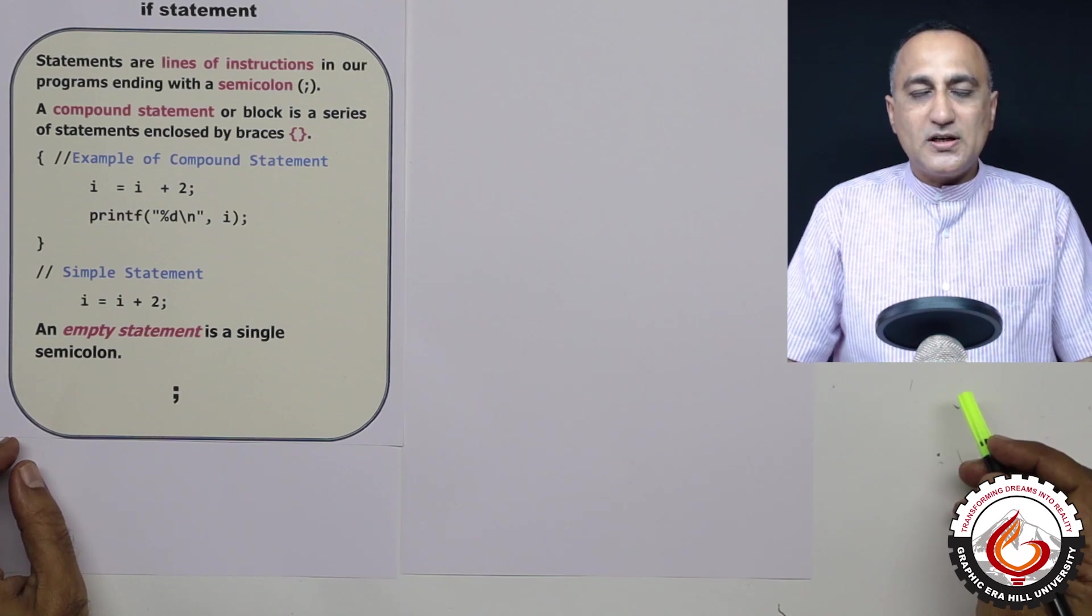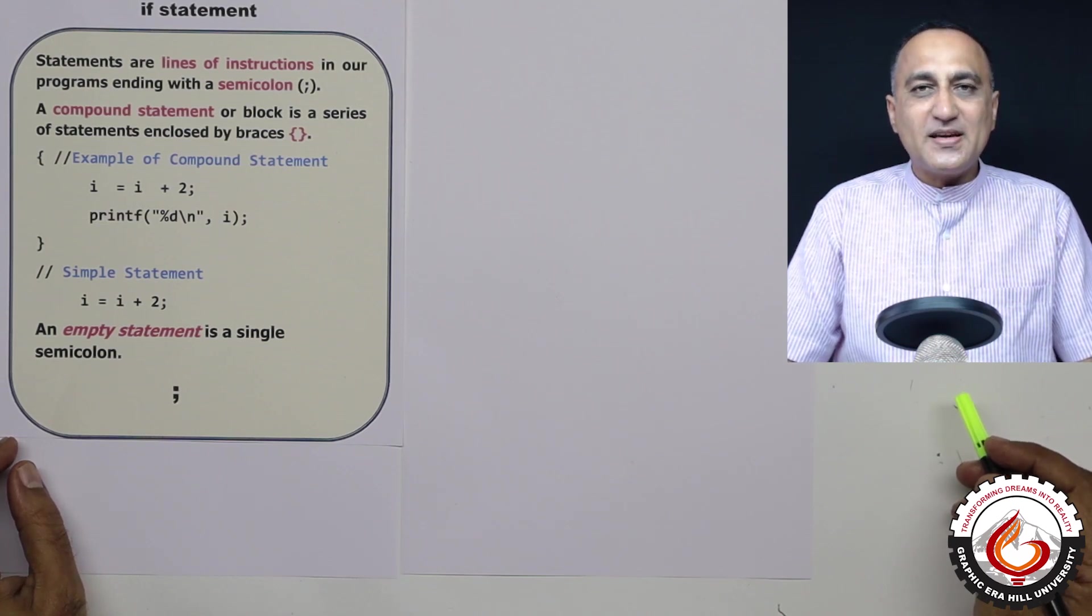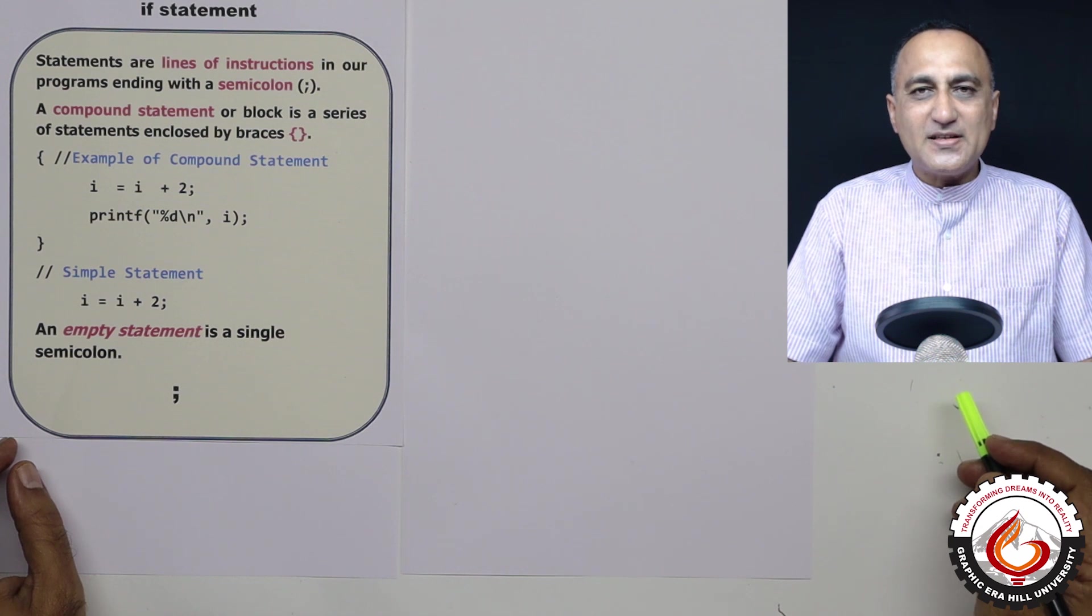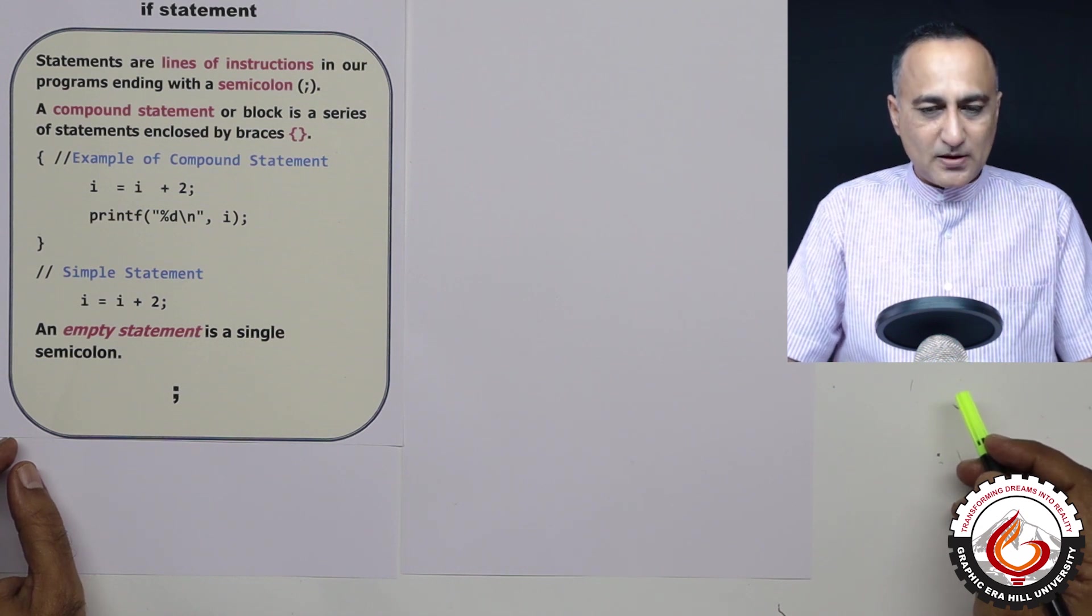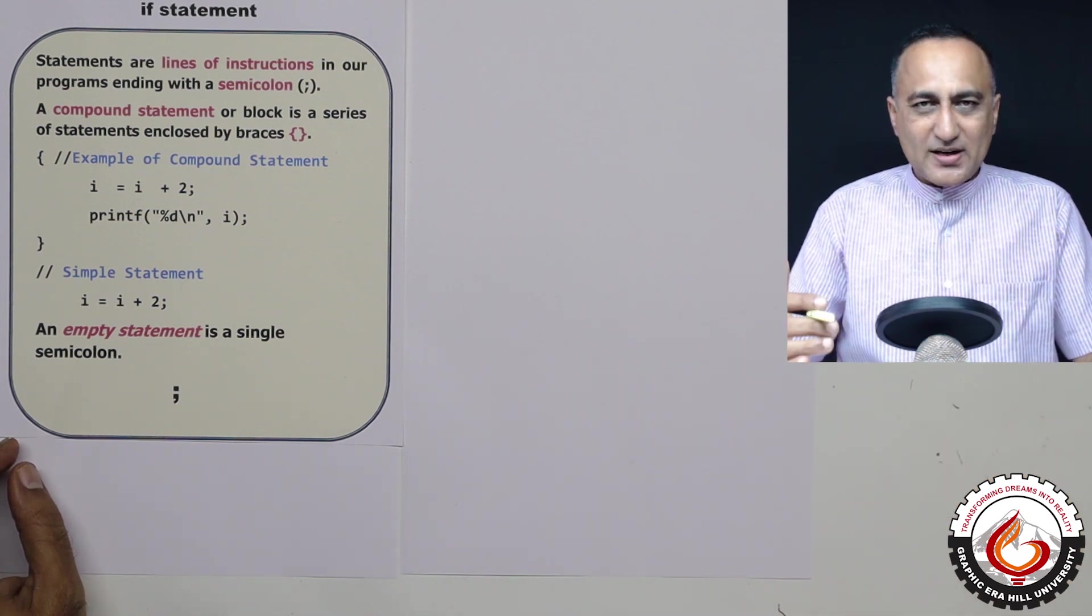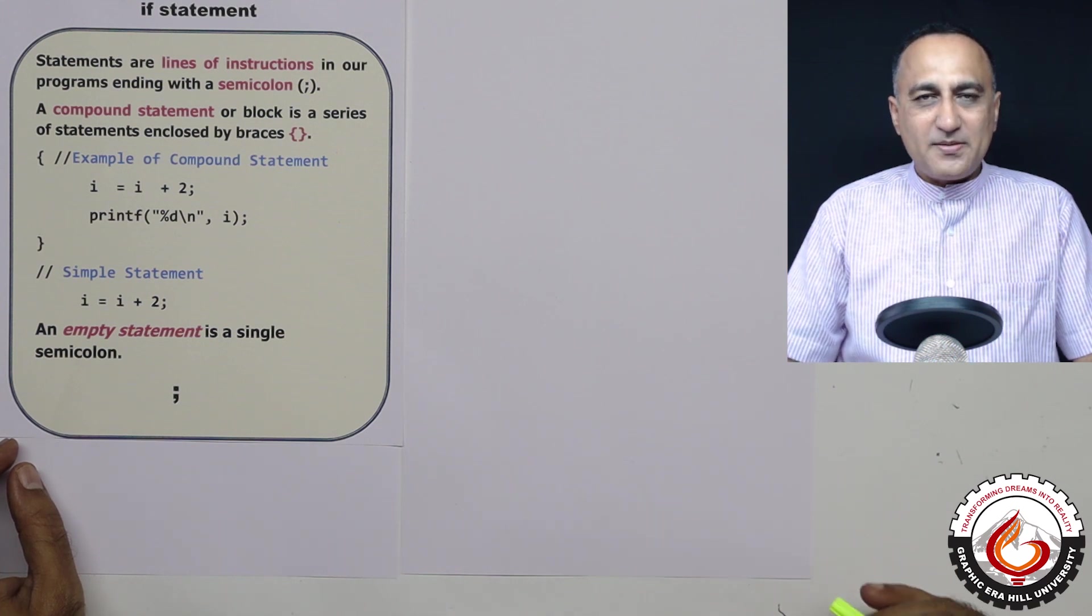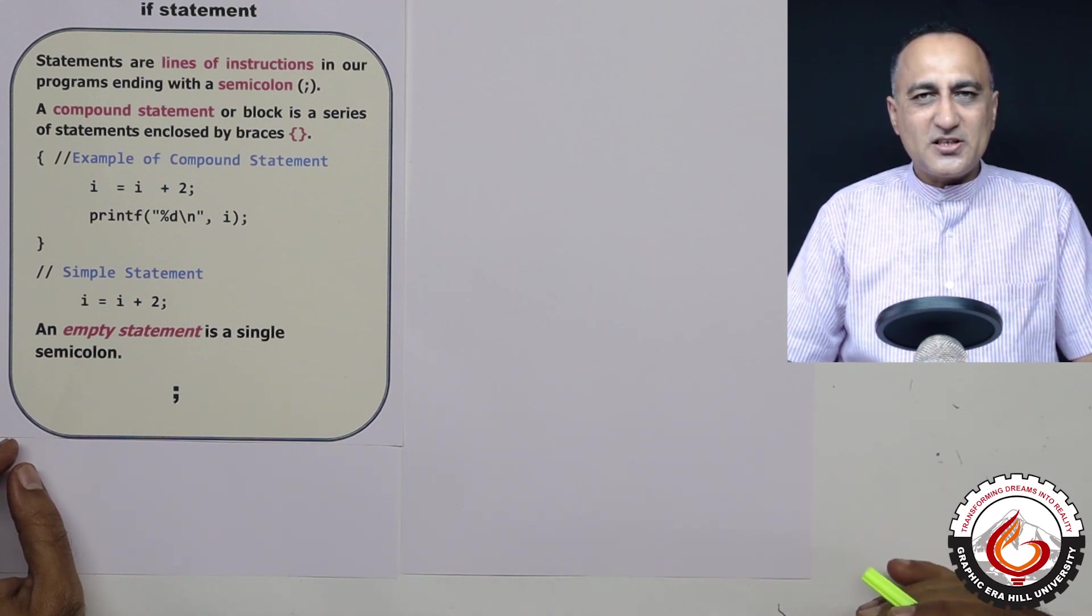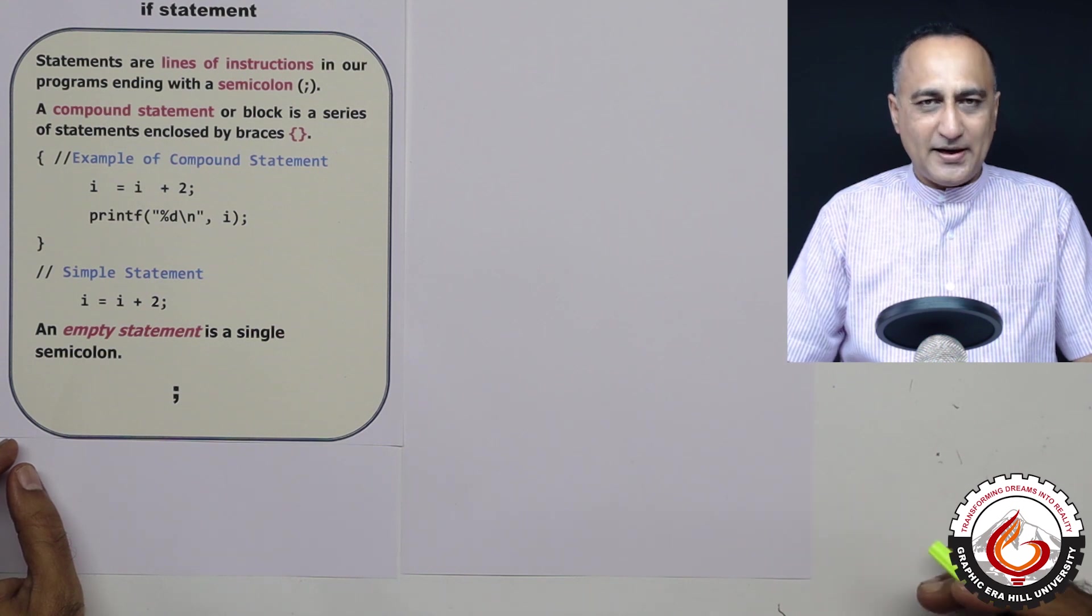We shall now talk about the first decision making statement, the if statement in C. So first let's understand what are statements. Statements are instructions followed by semicolon at the end.